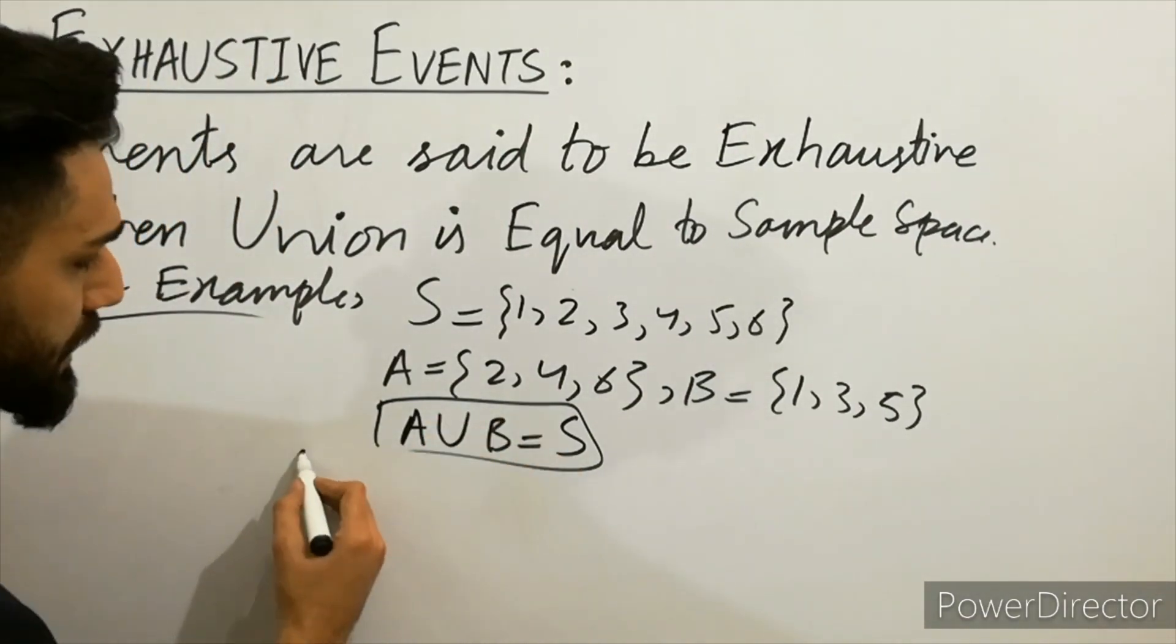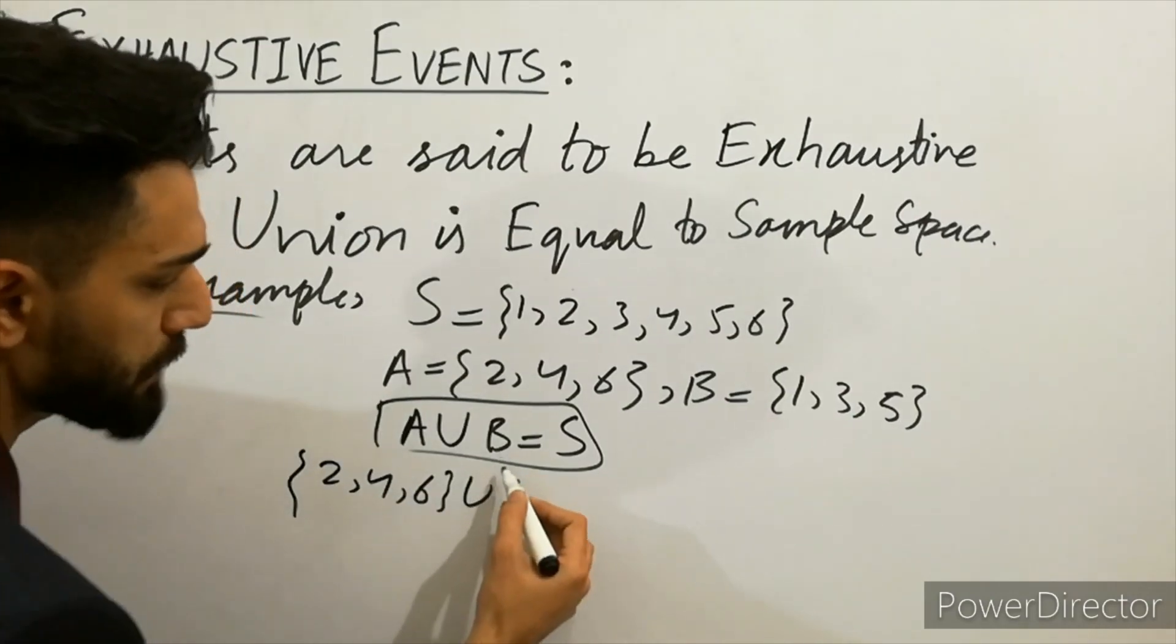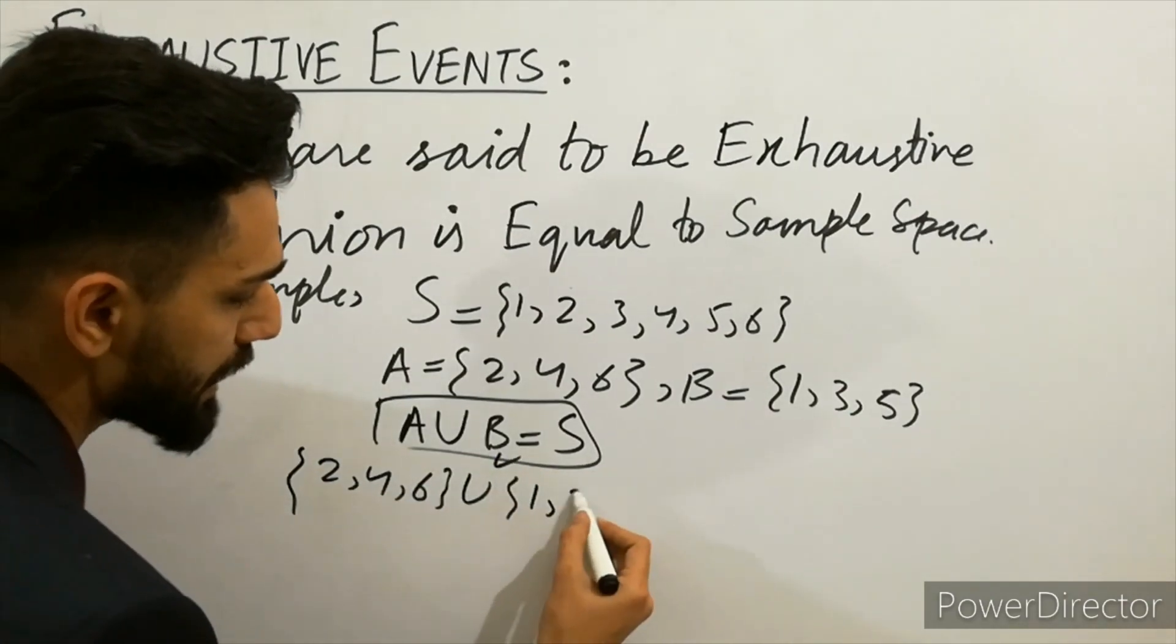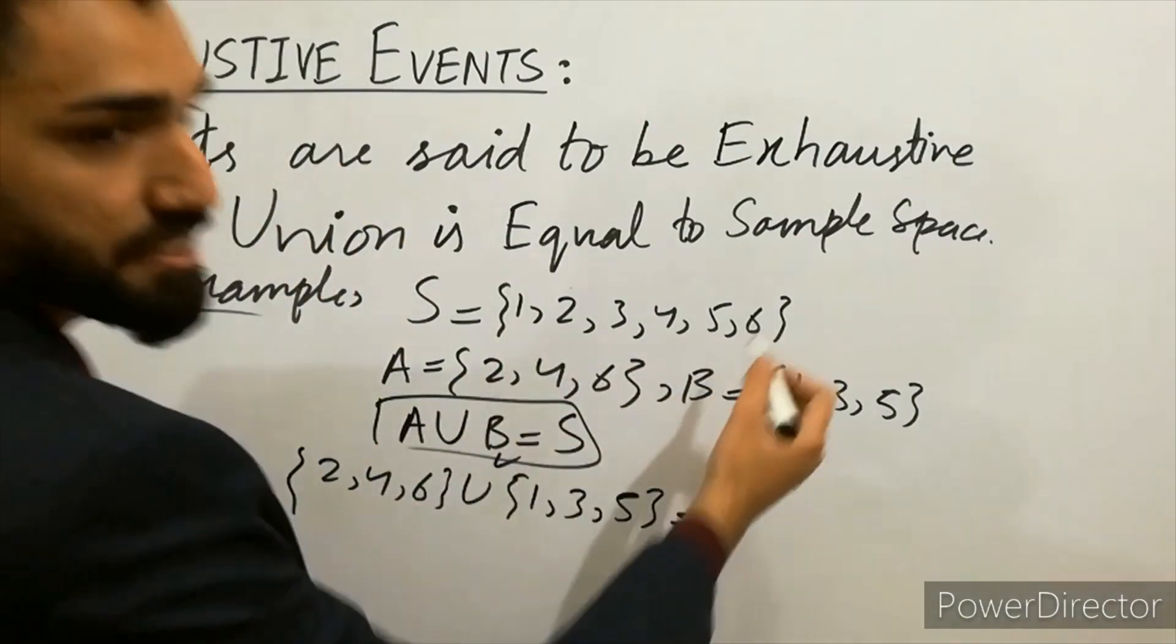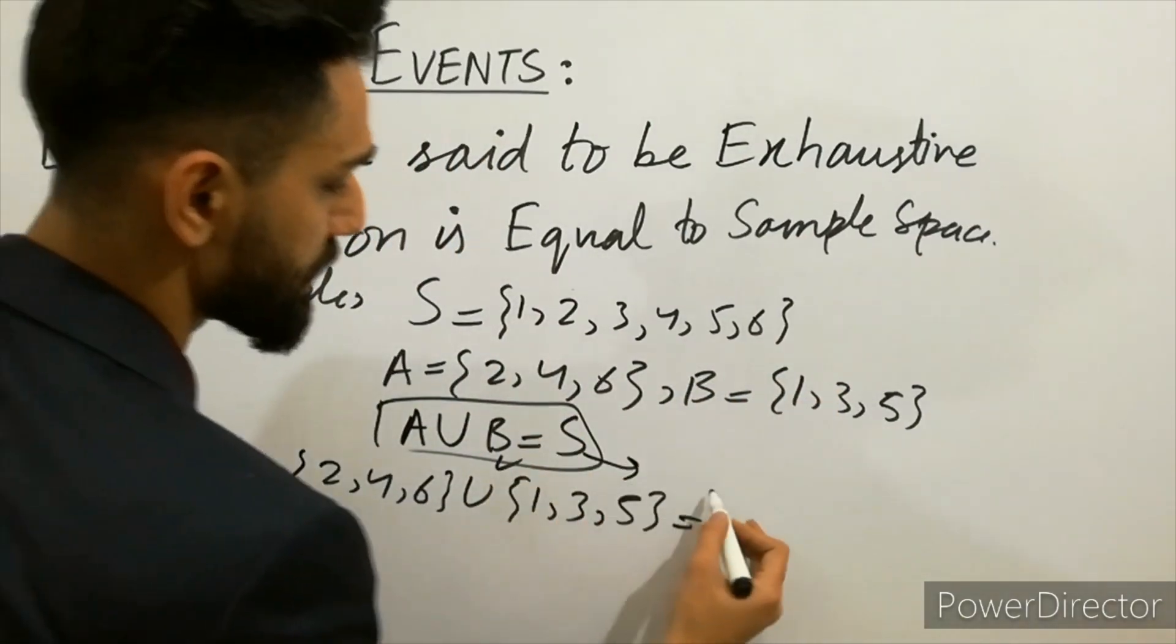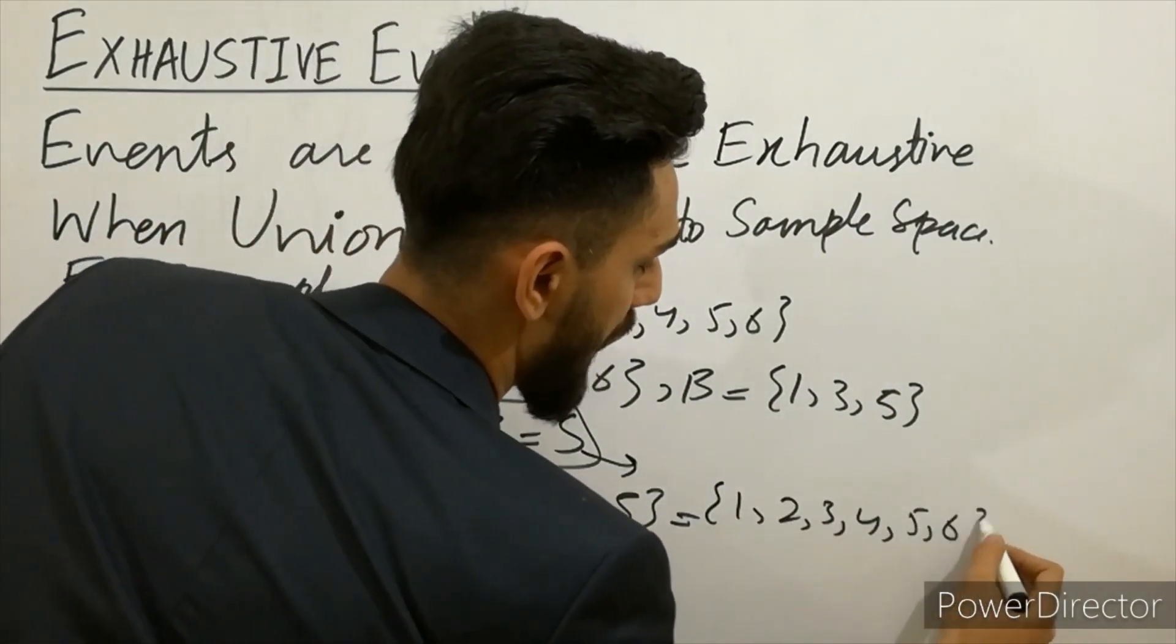Simply, A is given here {2, 4, 6} union and B is equal to {1, 3, 5}. The sample space is already given, sample space is here {1, 2, 3, 4, 5, 6}.